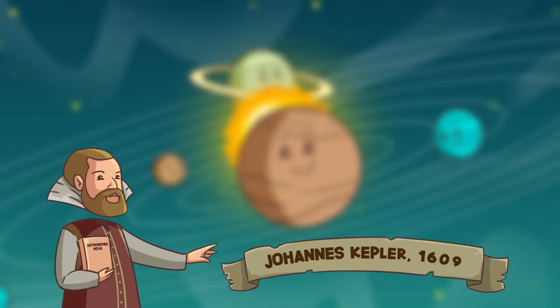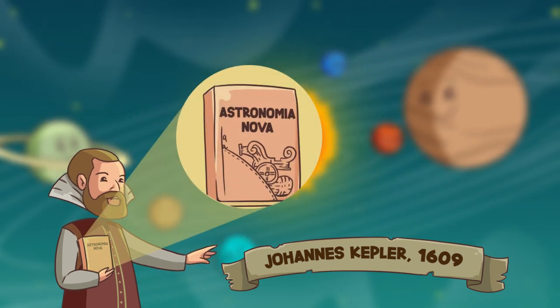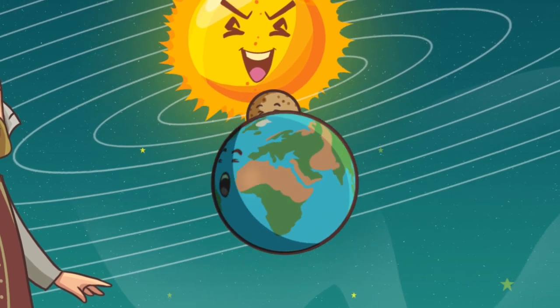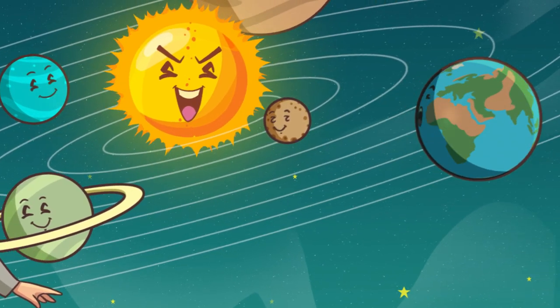In 1609, the German scientist Johannes Kepler published the Astronomia Nova. In this piece, he concluded that not only do the planets move in elliptical orbits around the Sun,